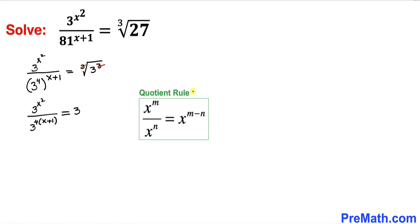Now let's recall this quotient rule. We are going to apply it on the left-hand side. So the left-hand side could be written as 3 to the power x squared minus 4 times x plus 1, equal to 3 on the right-hand side.